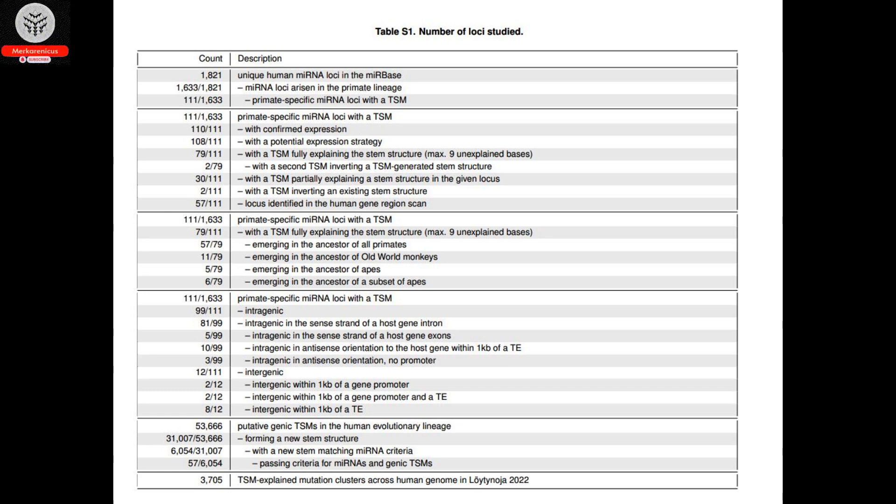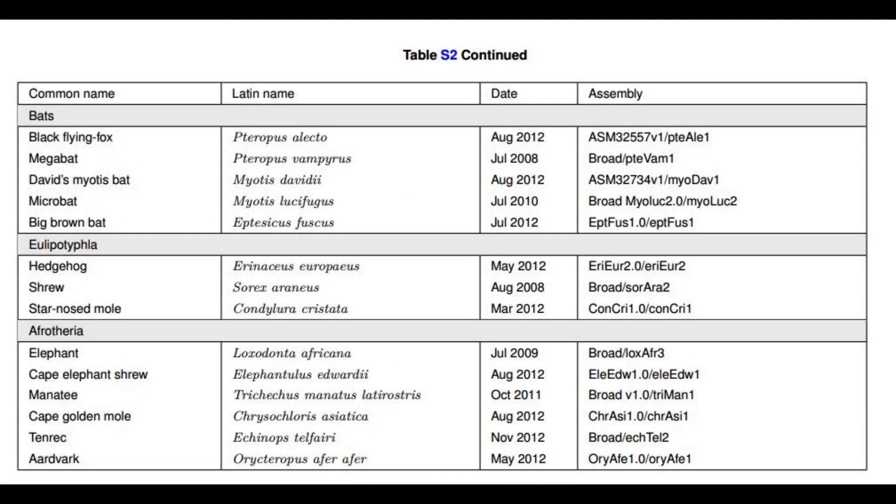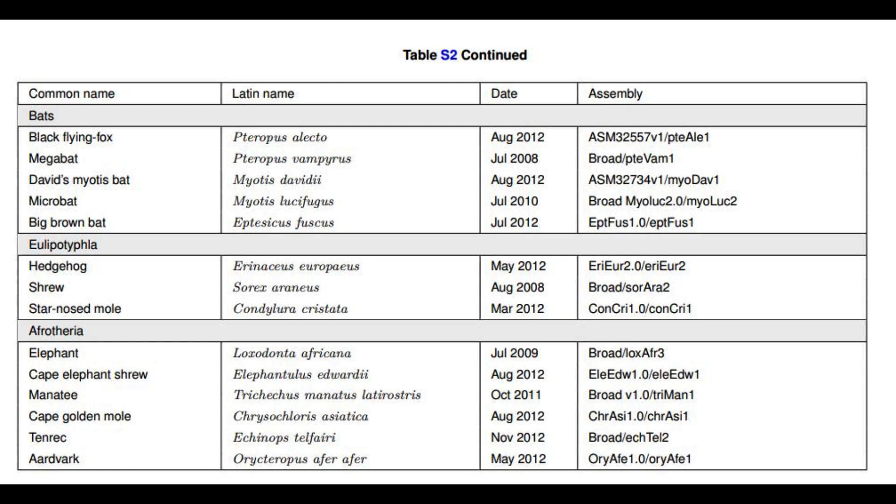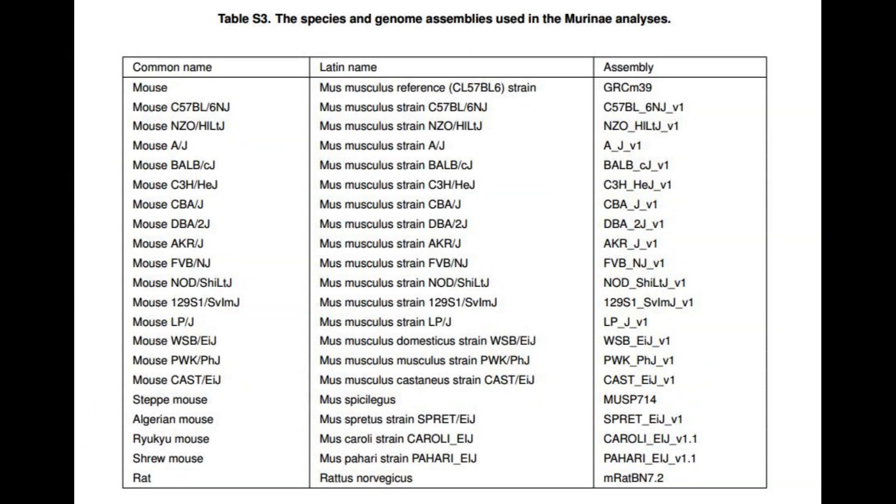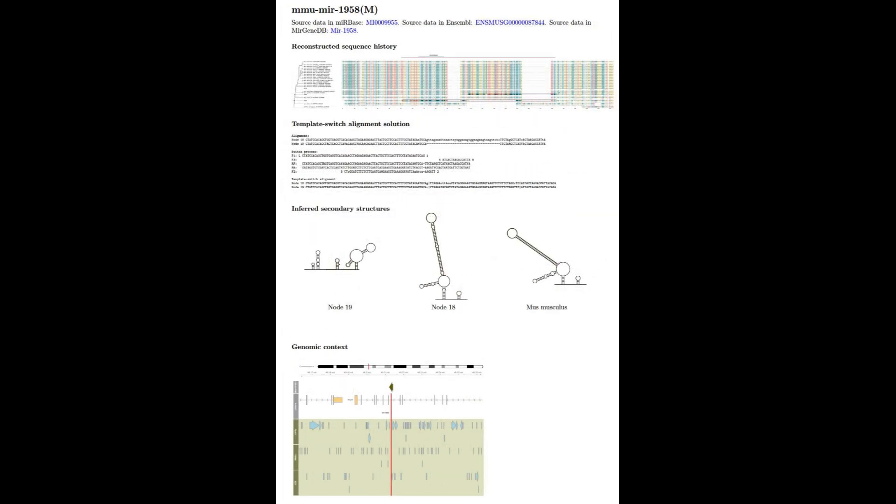According to Montinén, extensive knowledge of the genomes of numerous primates and mammals allows for comprehensive analysis. By comparing these genomes, it is possible to determine which species possess the microRNA palindrome pair and which do not. Through meticulous examination of the evolutionary timeline, it becomes evident that complete palindromes are formed through singular mutation occurrences.